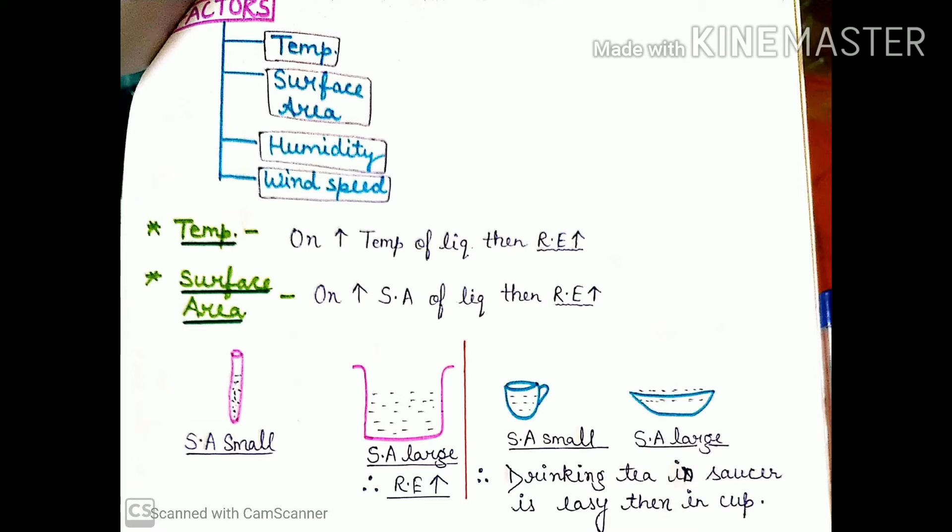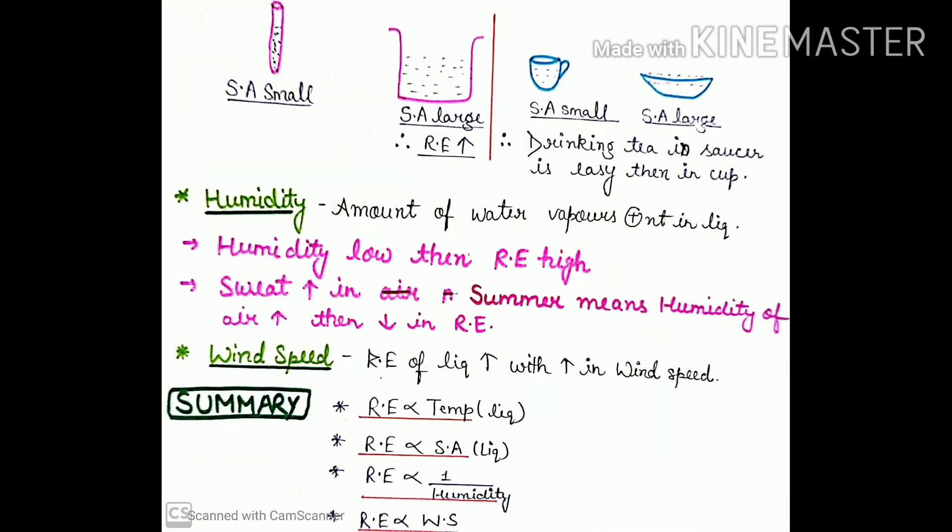What is the reason? If you took a plate or saucer, the surface area in terms of length and width is increased. That means it becomes more cold, its rate of evaporation increases. So drinking tea in the saucer is easier than in the cup.